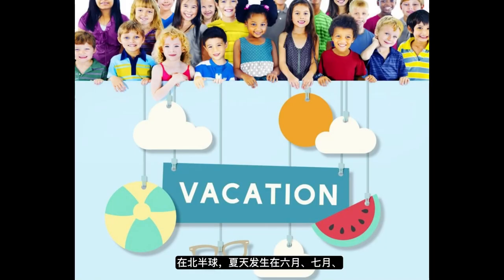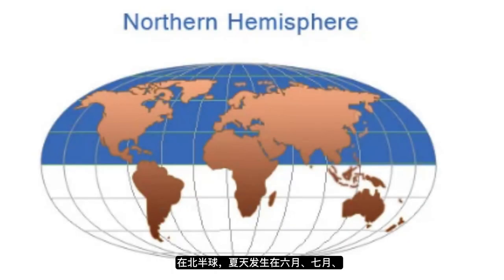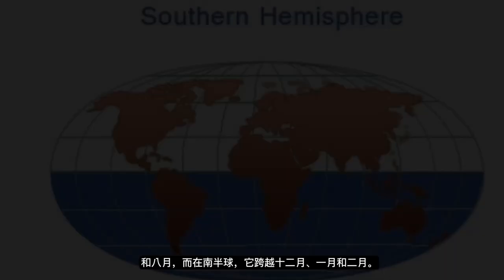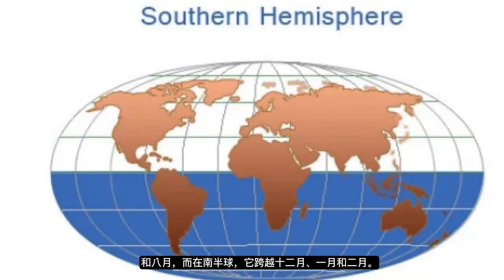In the Northern Hemisphere, summer occurs in June, July, and August, while in the Southern Hemisphere it spans December, January, and February.